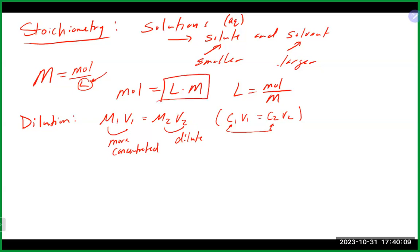It is NOT okay to leave volume in milliliters when you're using molarity and volume together to get moles, because you'll get millimoles rather than moles and be off by a factor of a thousand. So when using molarity alone to find moles, convert volume to liters. But if you're using the dilution equation, leaving volumes in milliliters is fine.